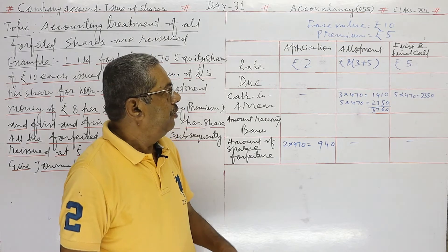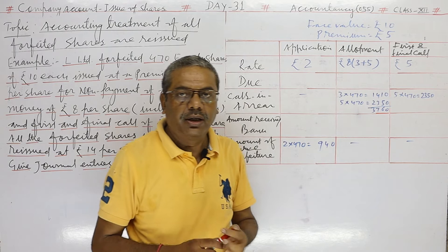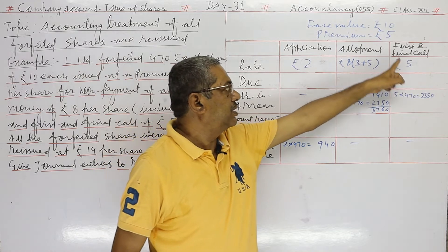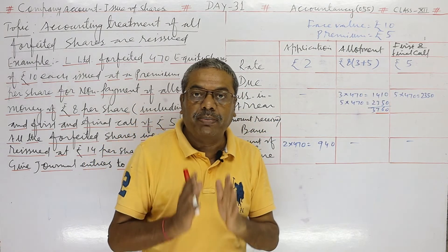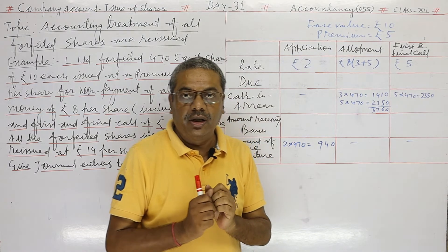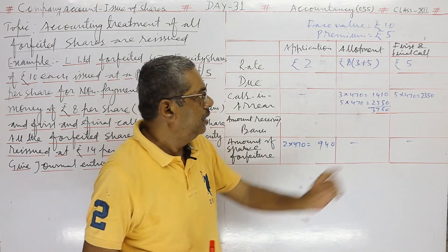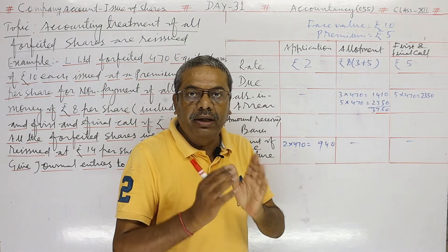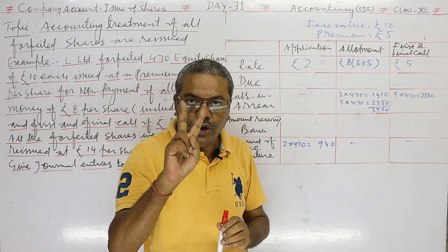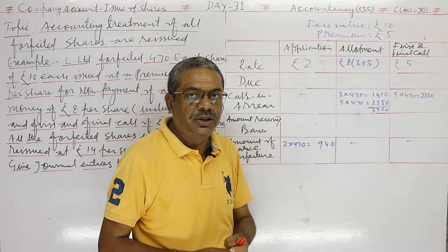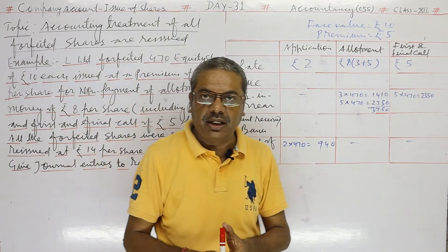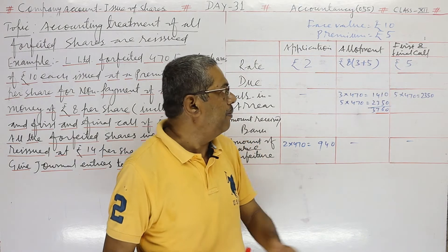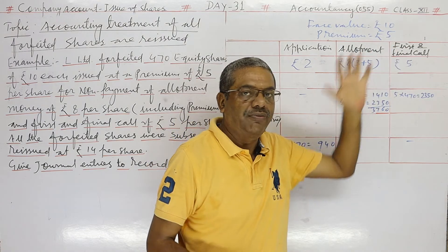Face value is rupees 10, premium is rupees 5. Allotment is 8 and first and final call is 5, but the rate of application is not given. To calculate: 5 plus 8 is 13; 10 plus 5 is 15; 15 minus 13 gives us 2. So the rate of application is rupees 2. The situation is 470 shares — unable to pay on allotment and first and final call.